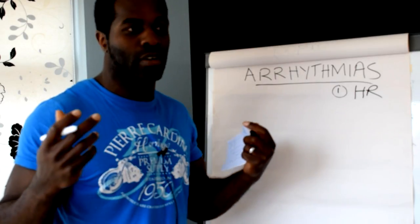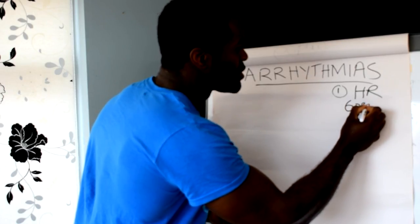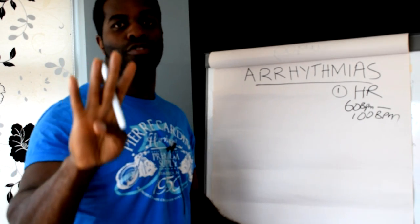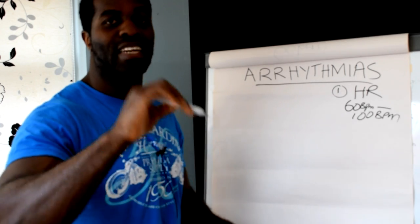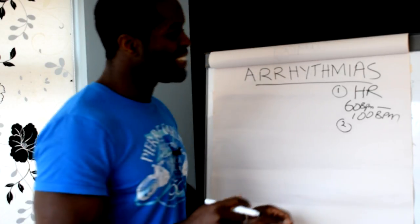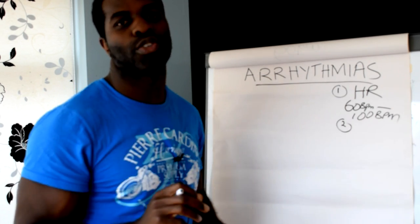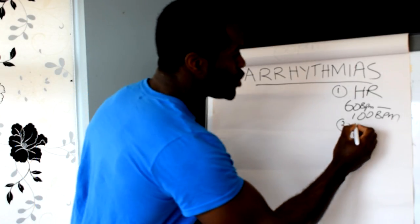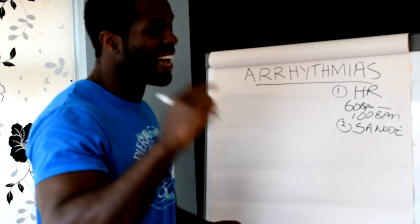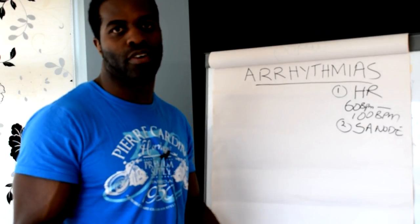The normal heart rate — what we consider the norm — is a heart rate of between 60 beats per minute and 100 beats per minute. That's criteria number one. The second criteria is that the heartbeat has to come from a specific point, called your SA node — the sinoatrial node. So criteria number two: this impulse has to come from your sinoatrial node for it to be considered a normal heartbeat.